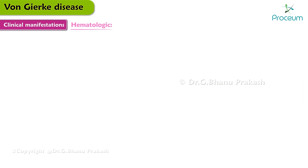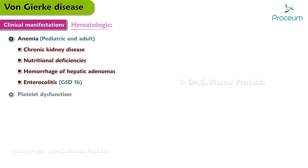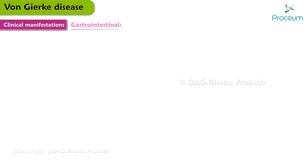Regarding hematologic manifestations, anemia, while uncommon in treated patients, can be observed in both the pediatric and adult populations. It can result from chronic kidney disease, nutritional deficiencies, hemorrhage of hepatic adenomas, enterocolitis in type 1B patients, and other factors. Platelet dysfunction, related to dyslipidemia, can result in easy bruising and epistaxis. Patients with GSD-1B also have intermittent or chronic neutropenia and neutrophil dysfunction.